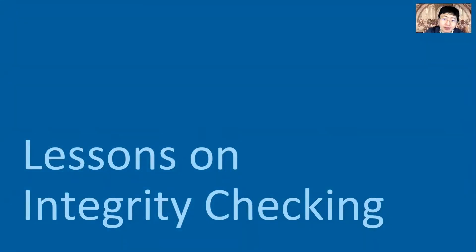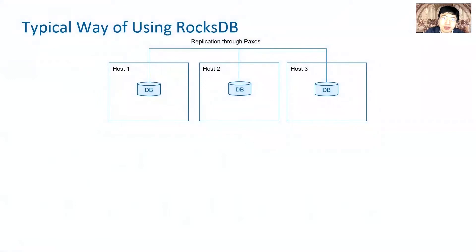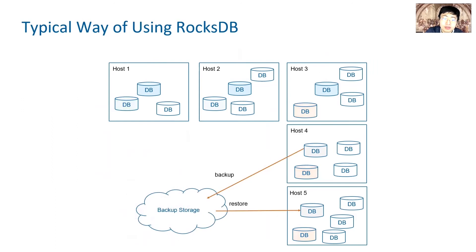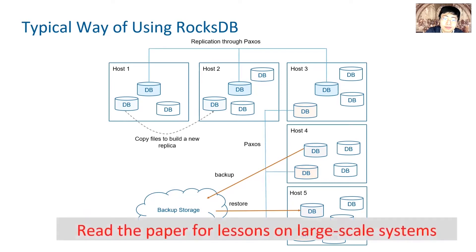The next area I will cover is integrity checking. Let's start with how users use RocksDB. Most RocksDB users replicate their data to multiple hosts. When a replica needs to be rebuilt for various reasons, users often physically copy the RocksDB files. We run one host with multiple instances, so if one host fails, the load of rebuilding replicas can be spread over many hosts. Some users also back up data by copying RocksDB files.